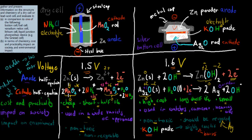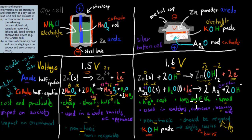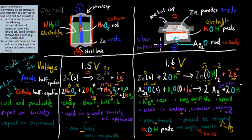To summarize: know your anode and cathode half equations. Voltage is very similar — 1.5V for the dry cell, 1.6V for the silver button cell. For cost and practicality, the dry cell is cheap but has a short shelf life; the silver button cell has a high cost but a long shelf life and is very small. For impact on society, dry cells are used widely in most appliances; button cells are used for smaller devices where dry cells don't fit. Both have a very minor environmental impact as they're non-toxic, though the KOH paste in button cells can cause burns. In evaluation, both complement each other — we use dry cells for most things, and silver button cells where devices are too small. Without both we wouldn't have all the appliances we have today.